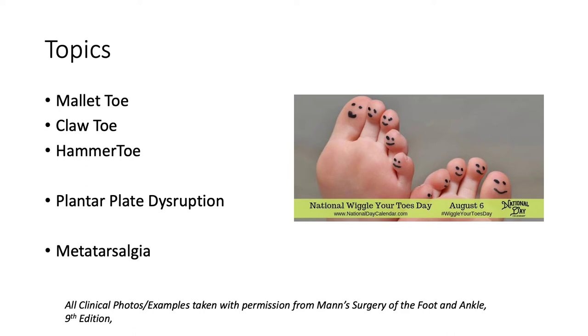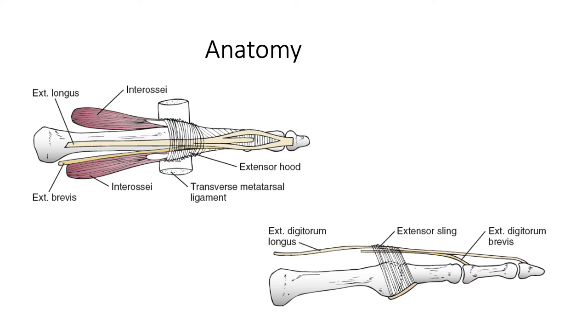Today we're going to be talking about lesser toe maladies — mallet toe, claw toe, hammer toe, plantar plate disruption, and metatarsalgia. Hopefully you were able to do the reading for this talk. In addition, the seventh chapter of Mann and Coughlin's Surgery of the Foot and Ankle will be really helpful, and most of the images used in this talk come from there.